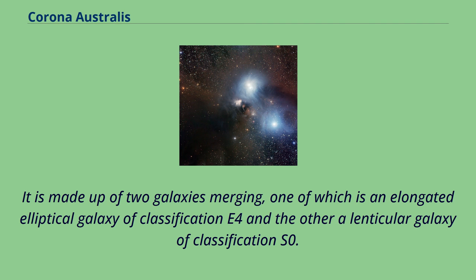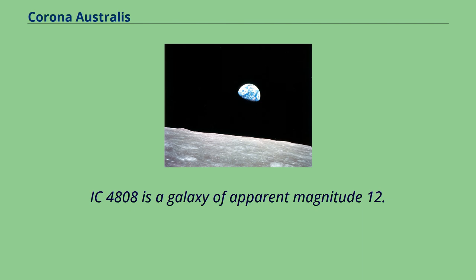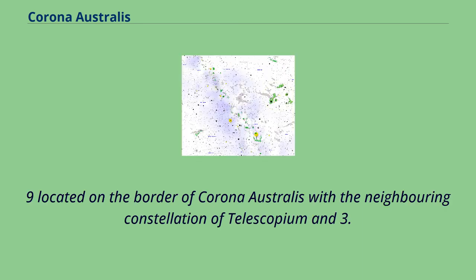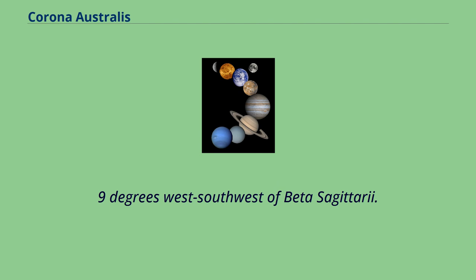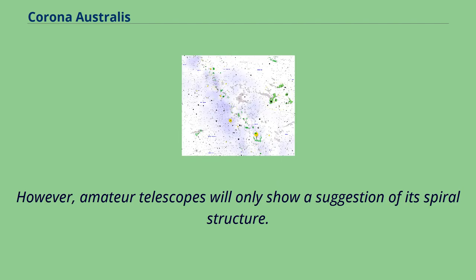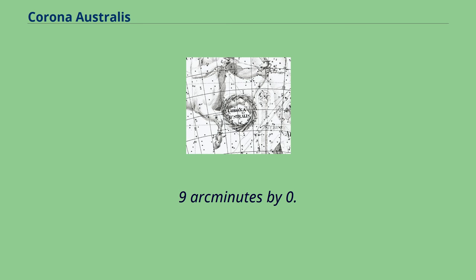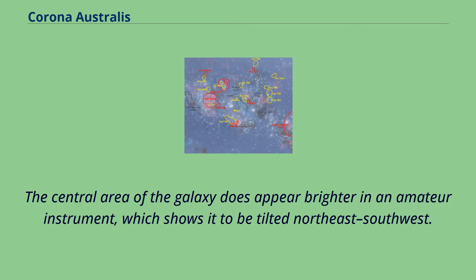IC 4808 is a galaxy of apparent magnitude 12.9 located on the border of Corona Australis with the neighboring constellation of Telescopium, and 3.9 degrees west-southwest of Beta Sagittarii. Amateur telescopes will only show a suggestion of its spiral structure. It is 1.9 arcminutes by 0.8 arcminutes; the central area of the galaxy appears brighter in an amateur instrument, which shows it to be tilted northeast-southwest.